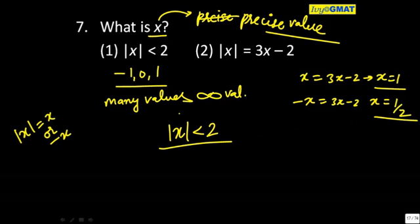But even 1 will satisfy and 1 by 2 will satisfy. In both cases, mod of x will equal how much? 1 or 1 by 2. So it will be less than 2. So what will be your final analysis? X will be a unique value or not a unique value?